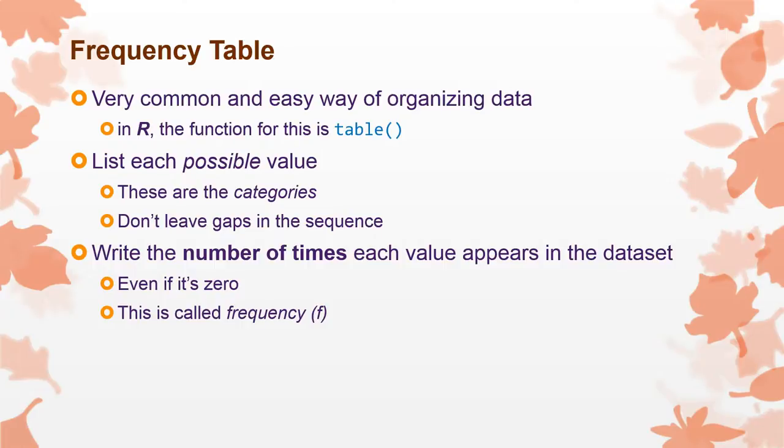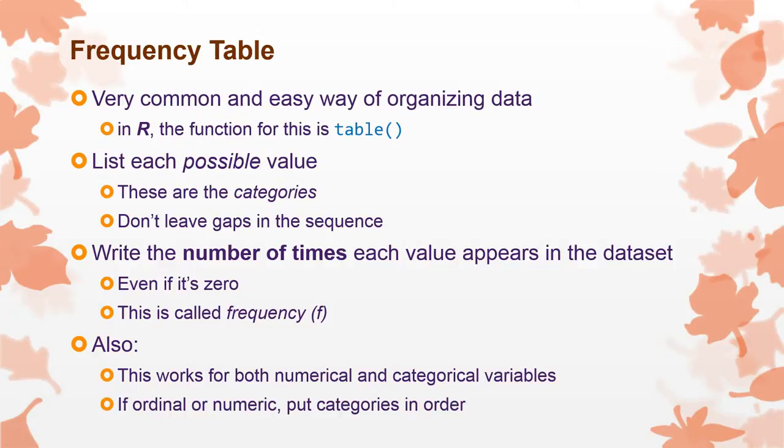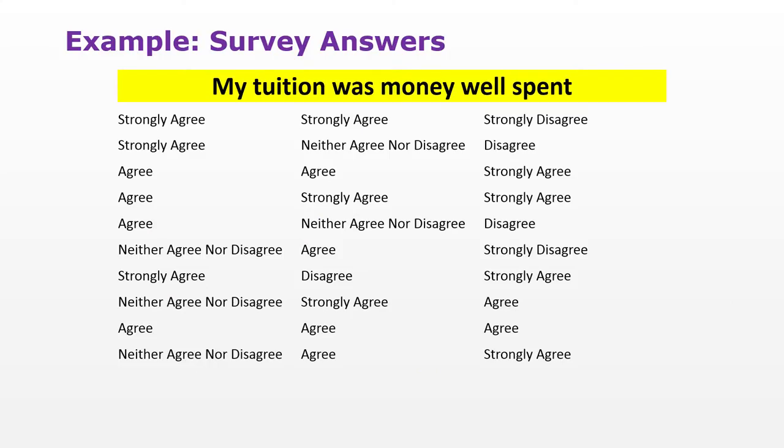This is called frequency. The frequency is the number of times a certain value appears. And we just usually abbreviate it F. It's an extremely common thing to write in charts or tables or anything like that. And also this particular thing works very well for even numerical or categorical variables. It doesn't matter. Either one's fine. If it's ordinal or numeric however then the categories have a natural order to them. So please put them in order in the frequency table.